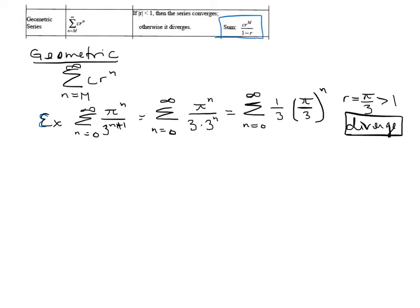We did one similar like this before where we had five halves where it was bigger than one, and we showed that that diverged by the divergence test. We could do the same thing here. I just wanted to point out that different tests can be used. Let's look at another example. Let's actually switch these.